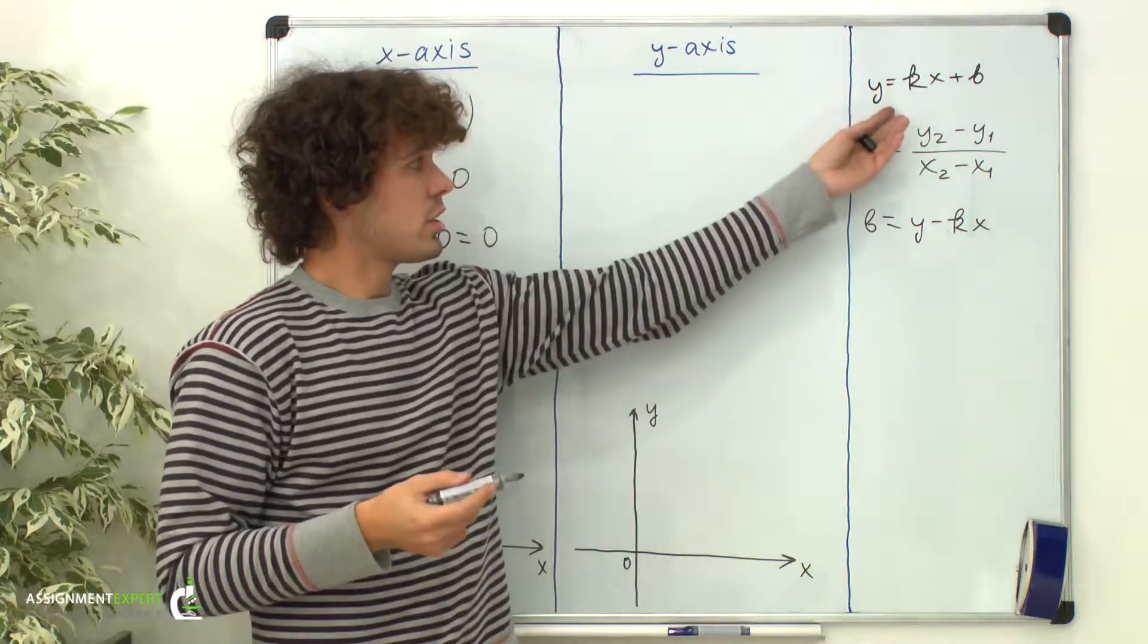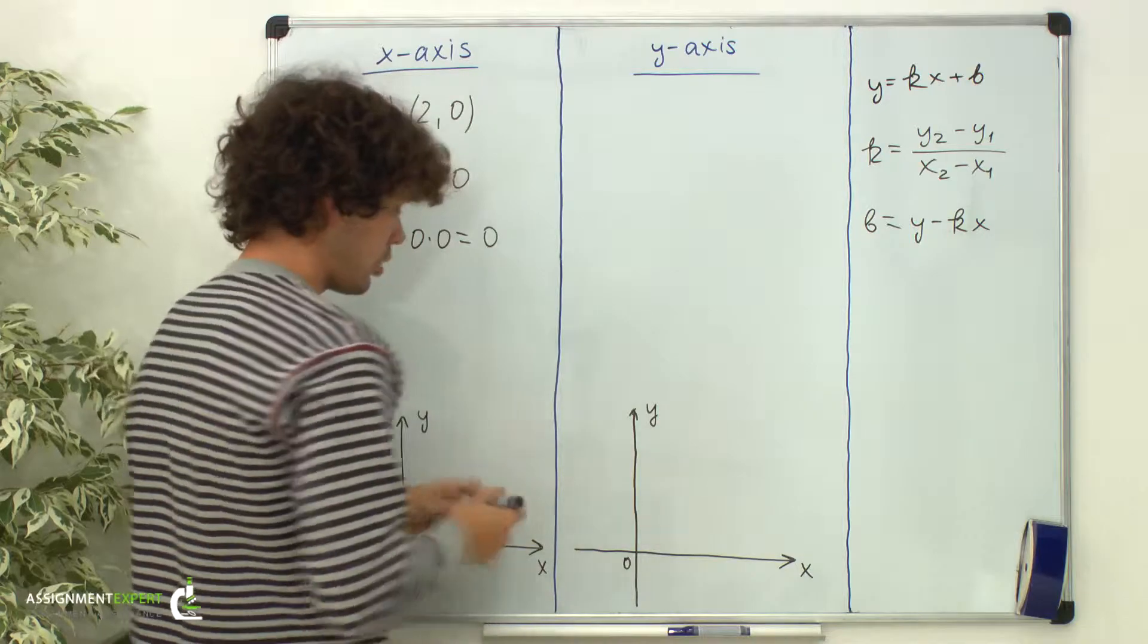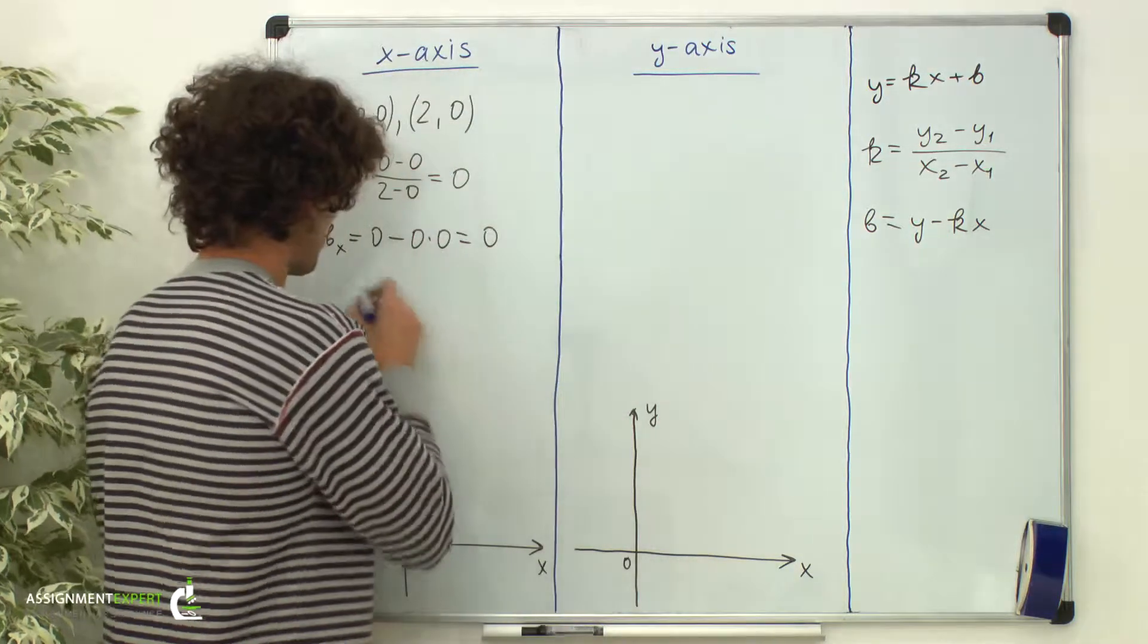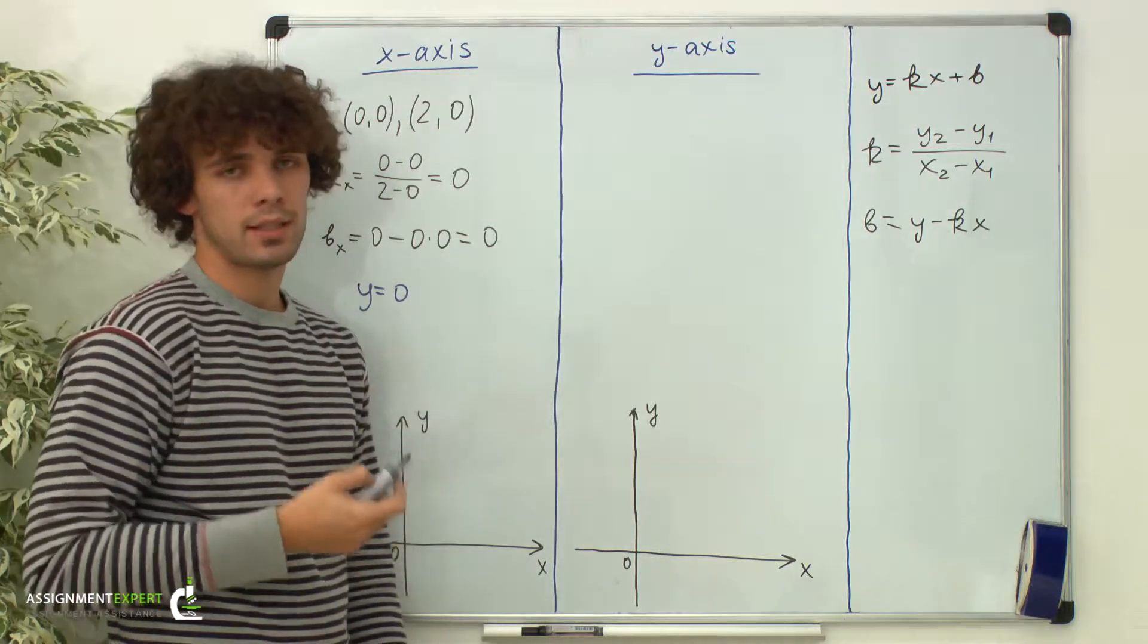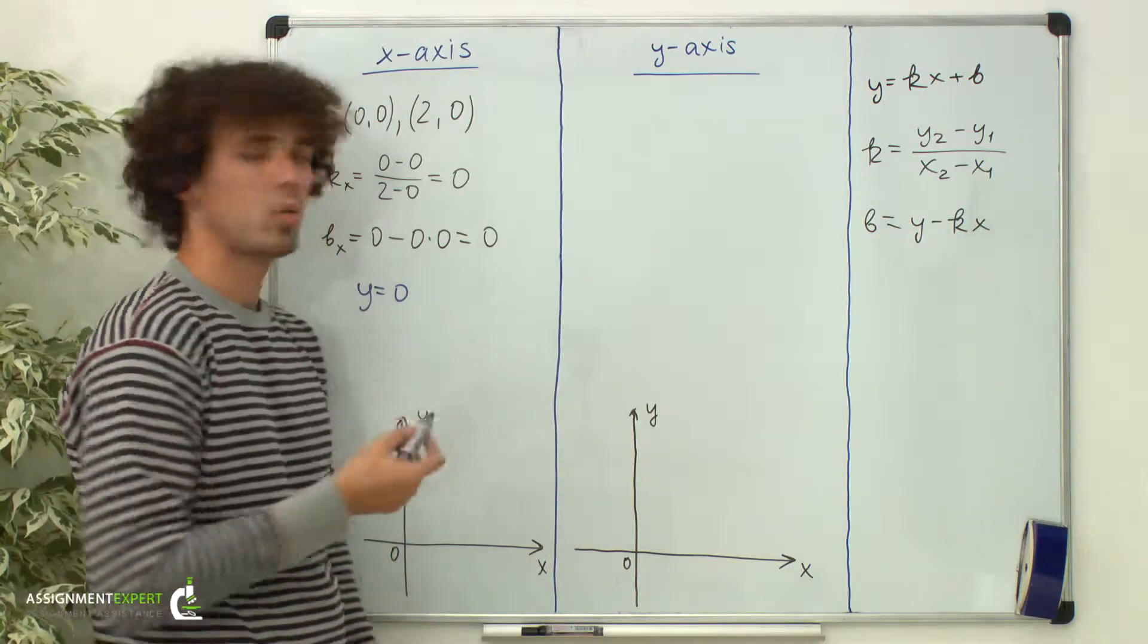And now using this general equation, we can say that the equation of the x-axis is y equals 0. And this makes sense because any point on the x-axis has ordinate y equals 0.